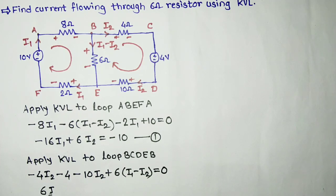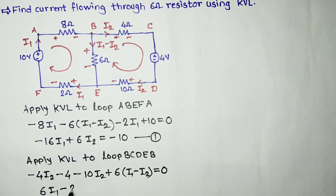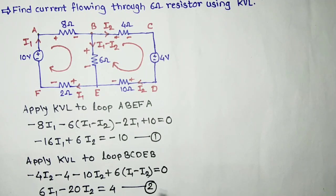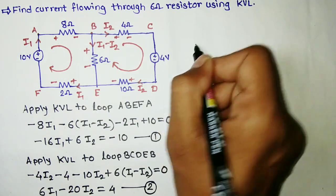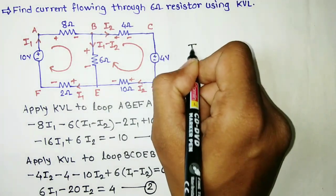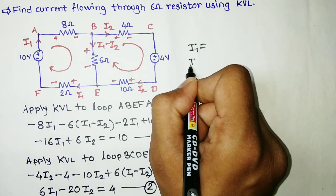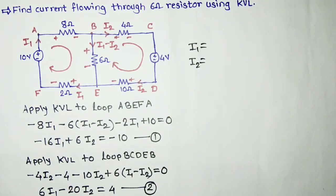After simplification you get: 6 times I1 minus 20 times I2 equals 4. This is Equation Number 2. If we solve Equations 1 and 2 simultaneously we will get I1 and I2. You can solve these equations on a calculator.